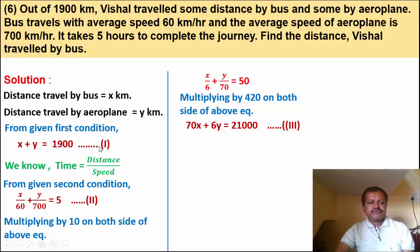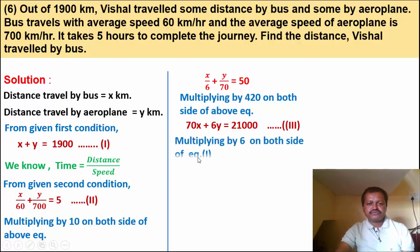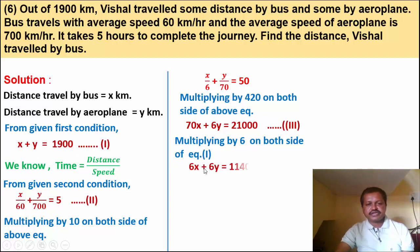Now to make coefficients of y the same in equations 1 and 3, multiply equation 1 by 6. So 6x plus 6y is equal to 11400. This is equation number 4.